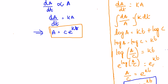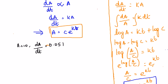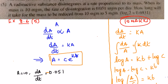Now let's proceed to the sum. We have the equation a = ce^(kt). They say the radioactive substance disintegrates at a rate proportional to its mass, and we assume the mass to be 'a'. When the mass is 10 milligrams, the rate of disintegration is 0.051 milligrams per day. So when a = 10, da/dt = -0.051 — I'm adding a negative sign because it is disintegration.